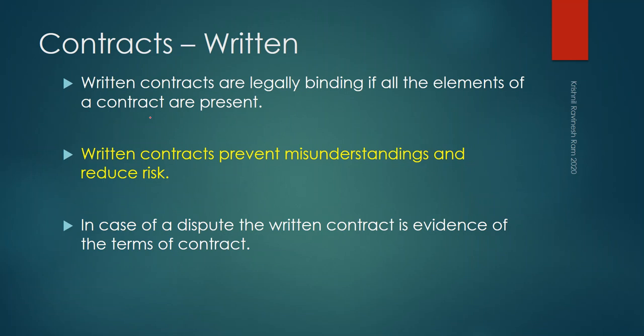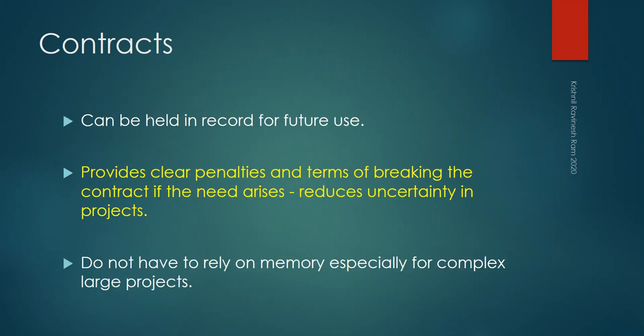In case of a dispute, a written contract is evidence of the terms of the contract. For example, if someone was told to do something and ended up doing something else, or is charging more than agreed, all of these things, if written down, can be taken to court. Written contracts also clearly outline what services will be provided, what payment methods will be followed, payment deadlines, and any applicable taxes.